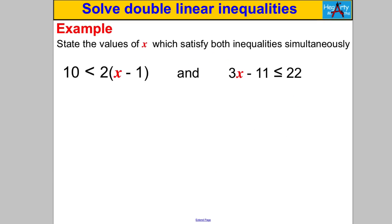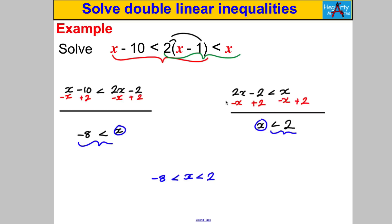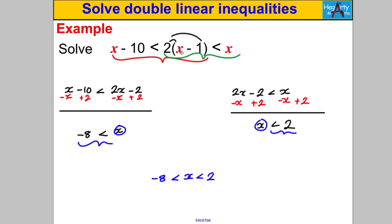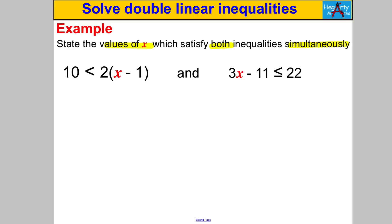Let's try another one — pause the video. This one is slightly different: instead of X in the middle, we have two separate inequalities and we need to find the values of X which satisfy both simultaneously, meaning at the same time. We solve each one independently, then find where both are satisfied.